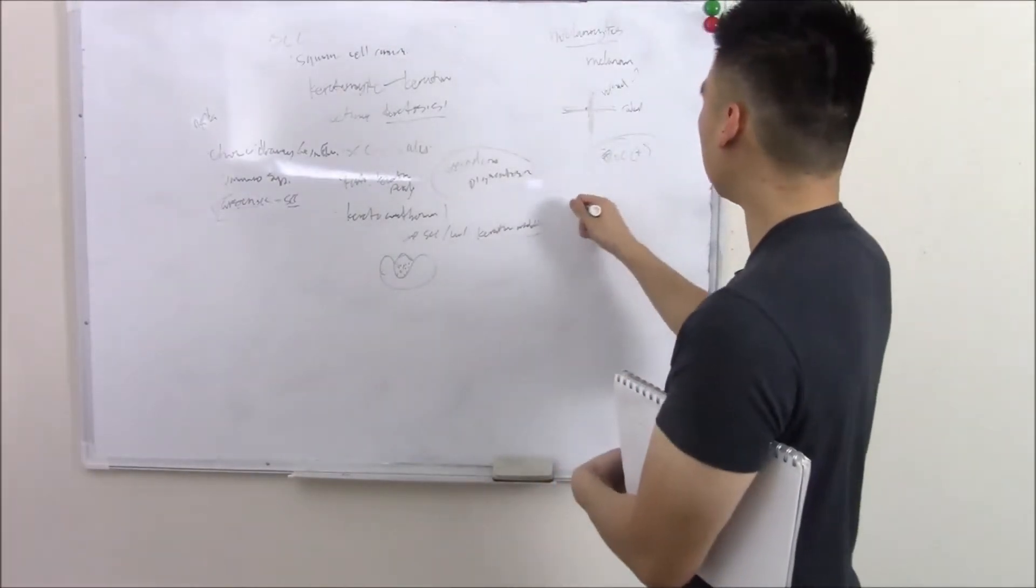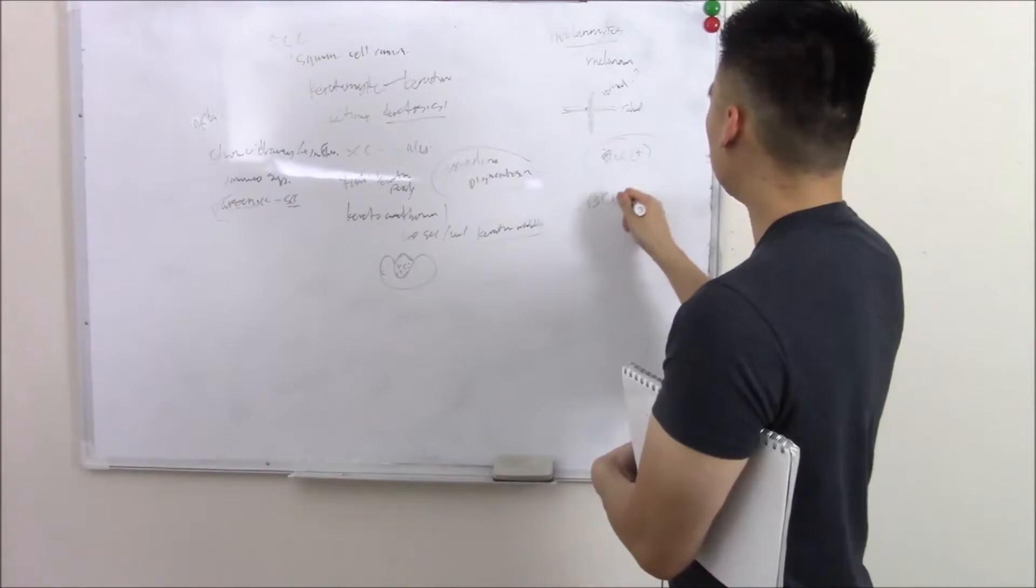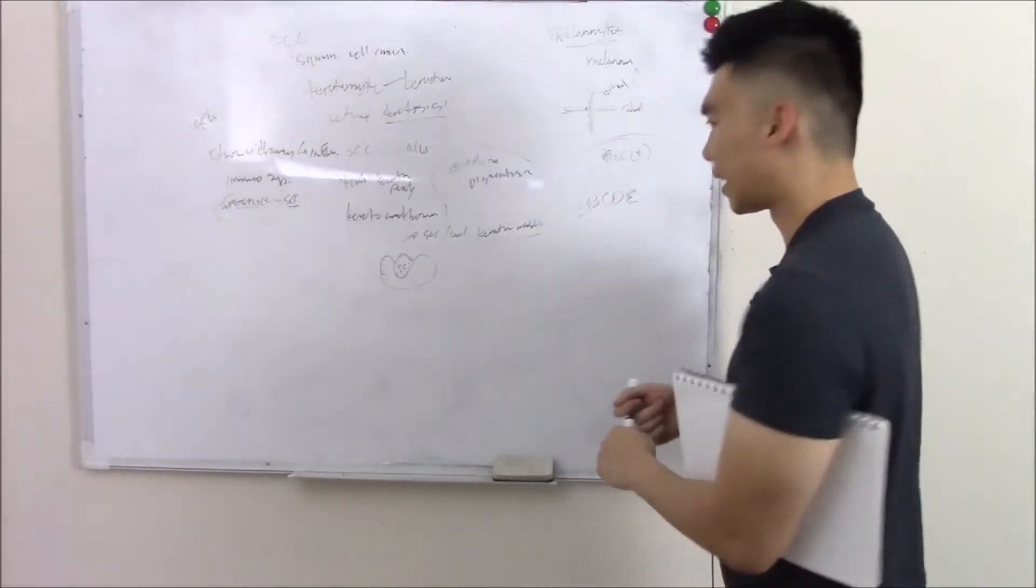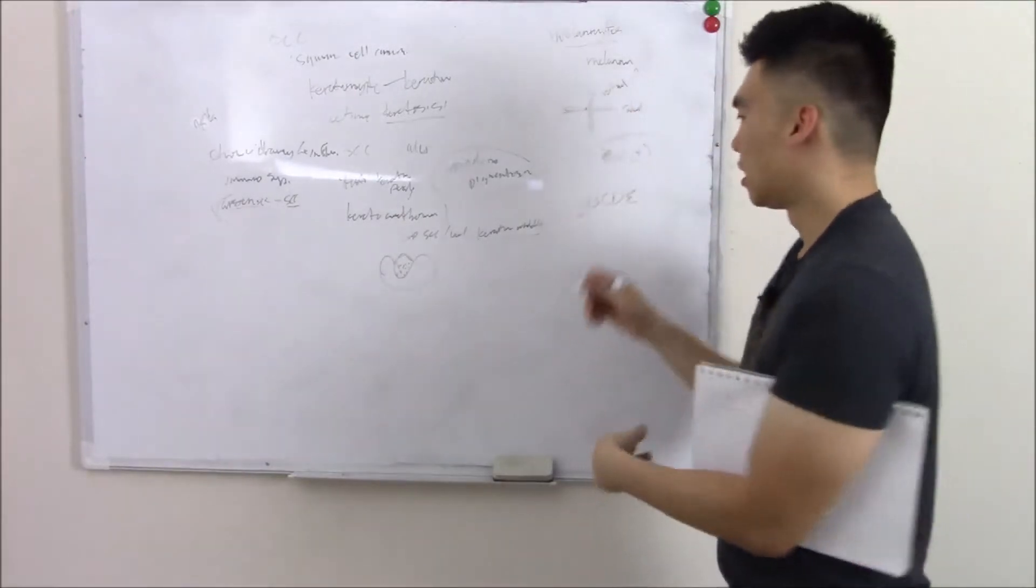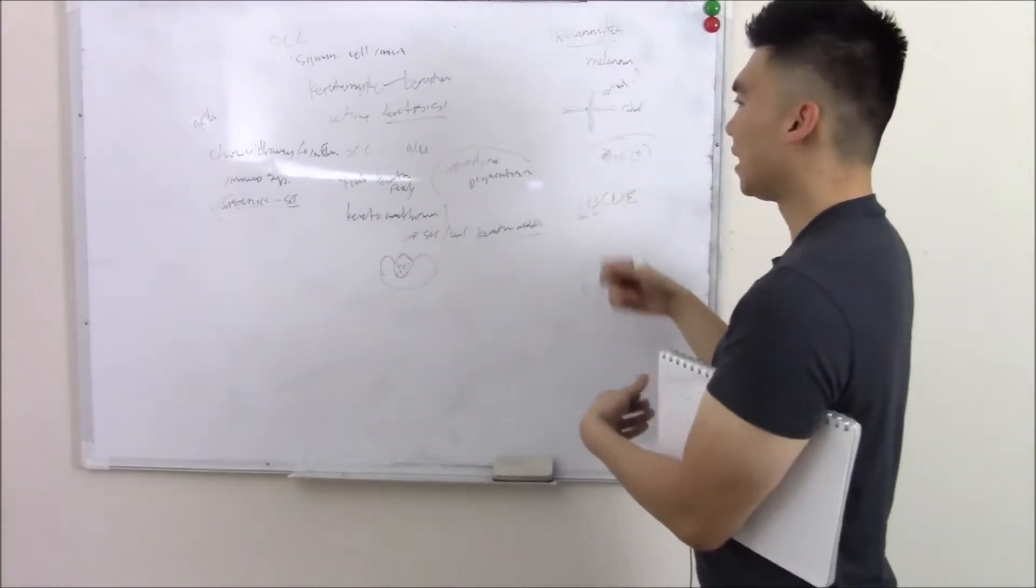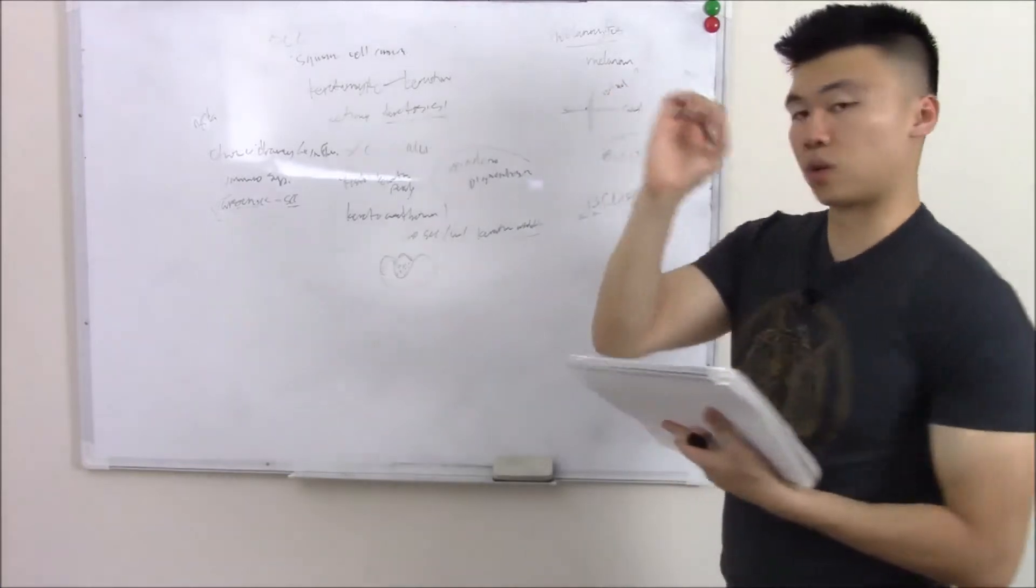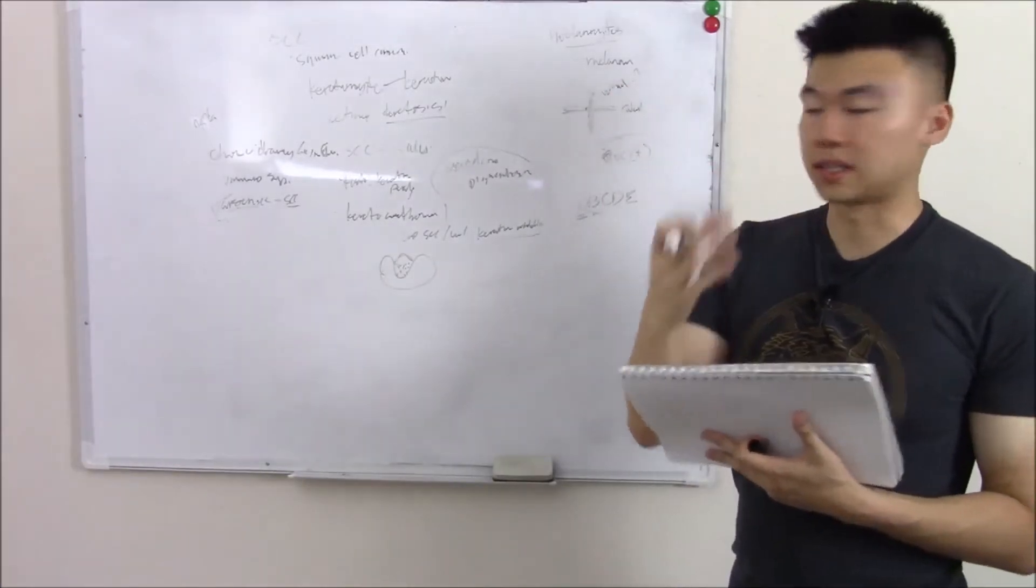Well, we do the ABCDE method. So we look for things like A, asymmetry of the mole. If it's well circumscribed or whether it's all wavy and wonky. B builds on that. That's just the border of it. Is the border nice and round or is it kind of irregular?